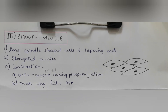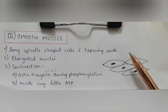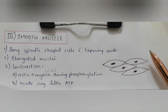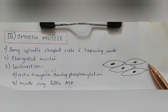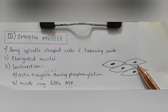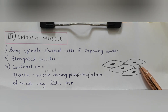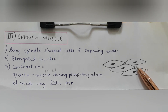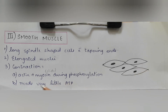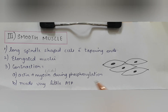Then we have the smooth muscle. Smooth muscles are long spindle-shaped cells with tapering ends. They have elongated nuclei. Contraction is seen due to sliding of actin and myosin during phosphorylation, and this requires very little ATP.